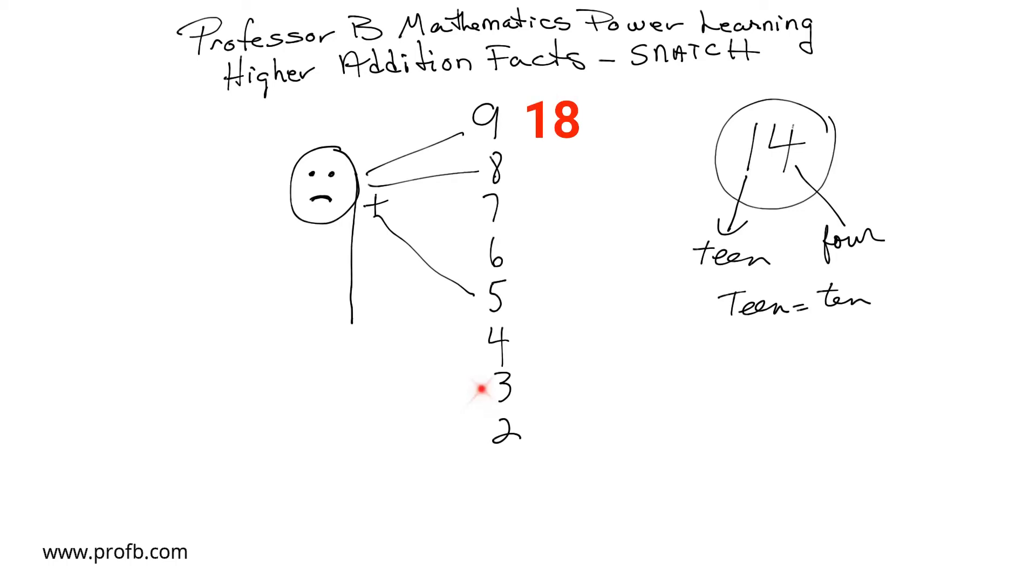And look here. 3 wants to get in on the act. So it would be 2 teen. Great. So 9 plus 3? 2 teen. Or we correct the very young children and tell them it's 12.